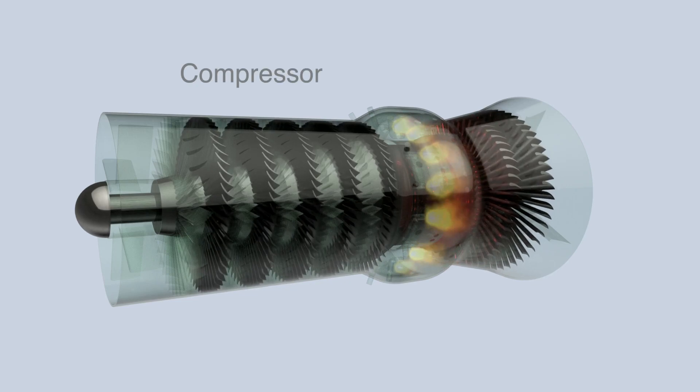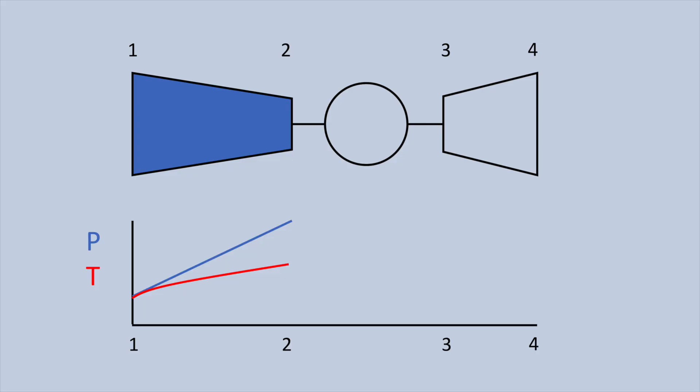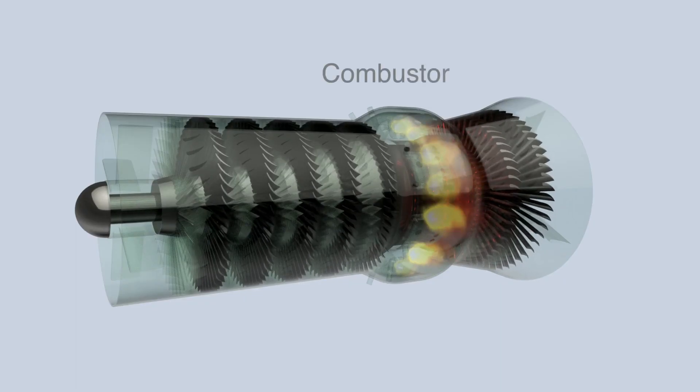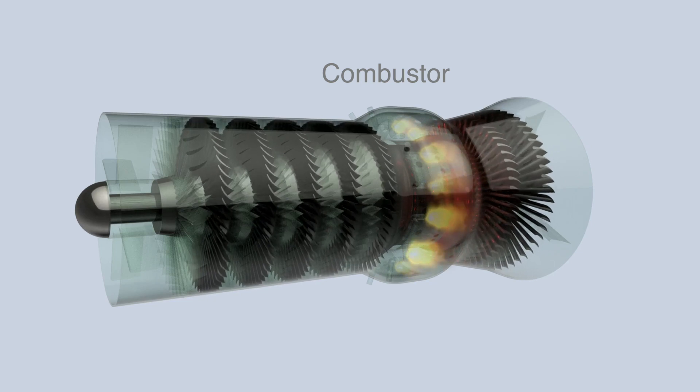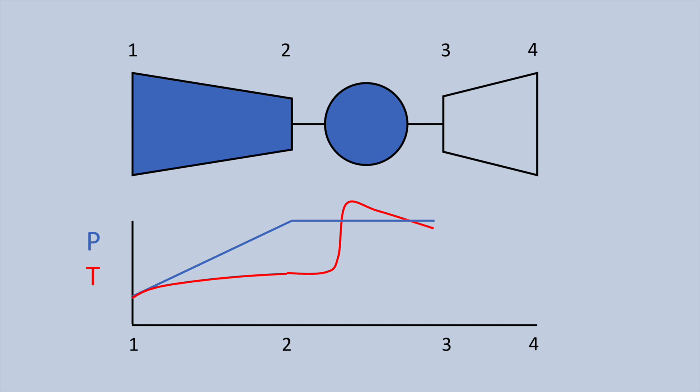Air enters the engine on the left and passes first through the compressor where the pressure and temperature are increased. Air then enters the combustor where fuel is added and ignited in a self-sustaining continuous flame. This causes the temperature to rise. A fraction of the air bypasses the flame to cool the combustor and inlet of the turbine, and this air causes the temperature to drop slightly after the flame.